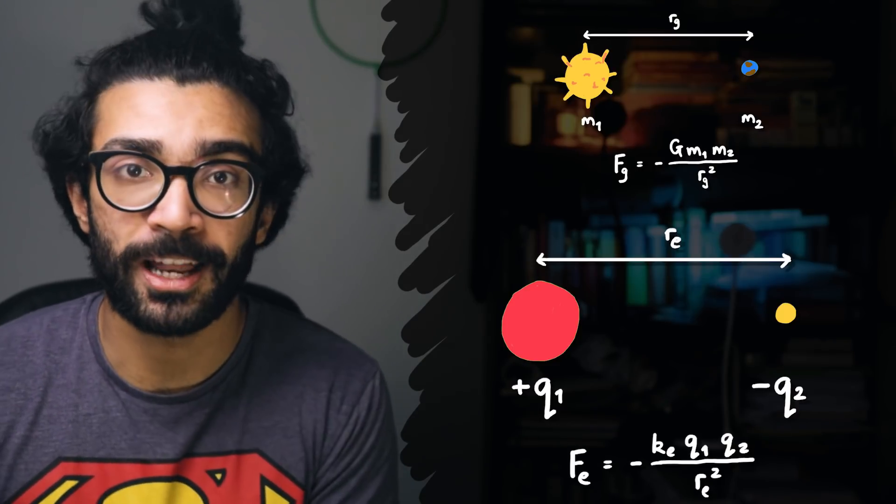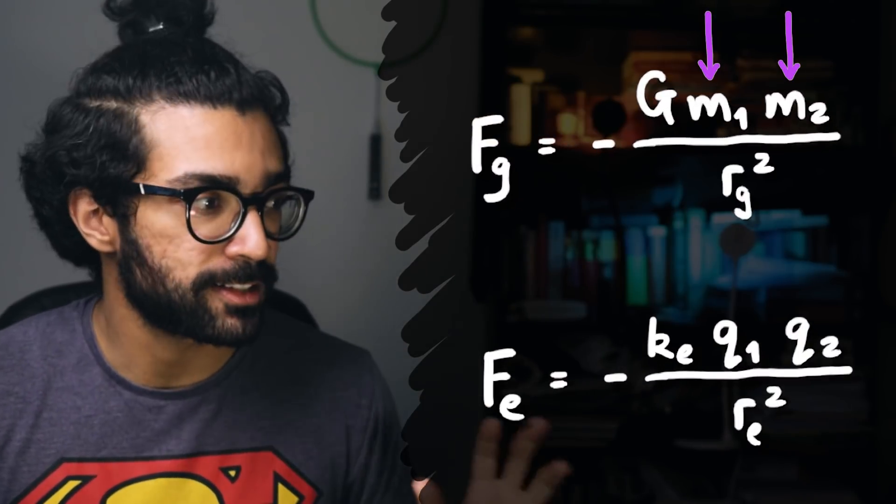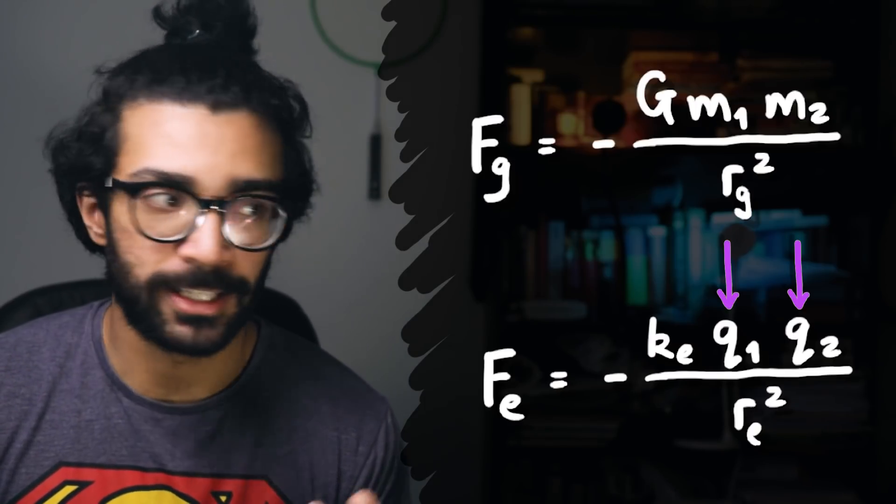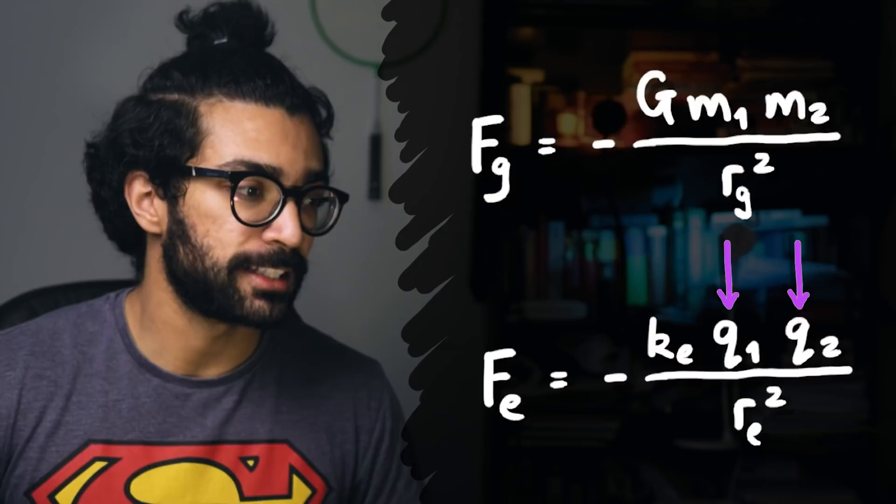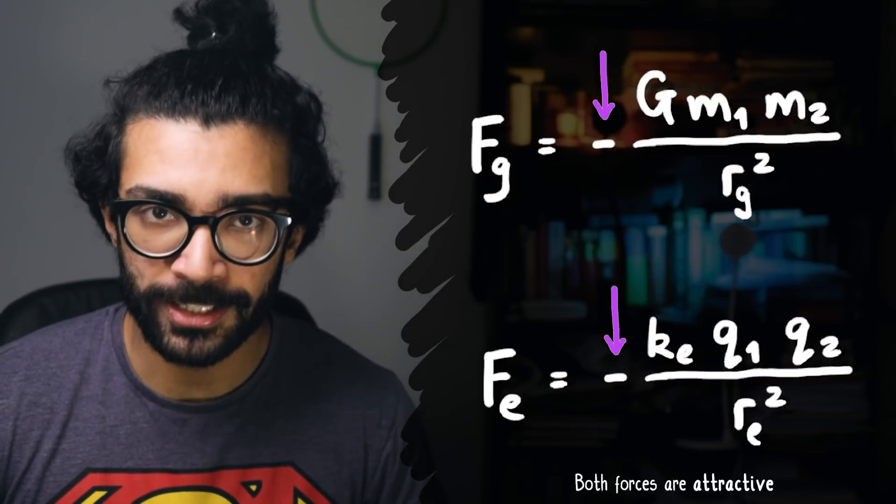I'm sure you can see the similarities here. The mathematical expression is almost the same, except in the second case you replace the masses of the objects being considered in the gravitational force with the charges in the electric force. A couple of things to note here. First of all, we see that there are negative signs in both expressions. This conventionally is used to mean that there are attractive forces.